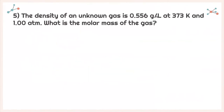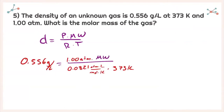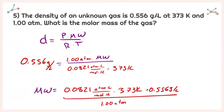Question 5 asks: the density of an unknown gas is 0.556 grams per liter at 373 Kelvin and 1.00 atmosphere. What is the molar mass of the gas? Using density equals pressure times molecular weight divided by R times temperature, plugging in our values and solving for molecular weight, we get 17.0 grams per mole.